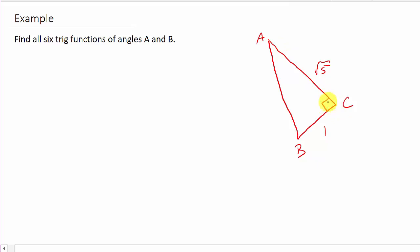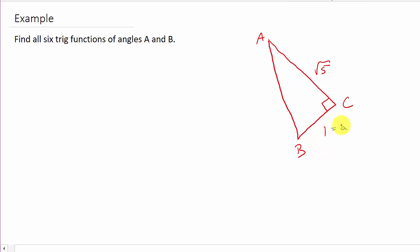Here's the right angle, so that means this side here is the hypotenuse. The length of this side is square root of 5, and the length of this side is 1. I'll call this side little a because it's opposite angle A, and I'll call this side little b because it's opposite angle B. And the hypotenuse I'll call little c because it's opposite angle C.